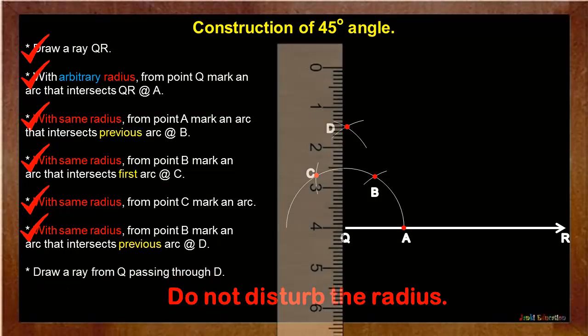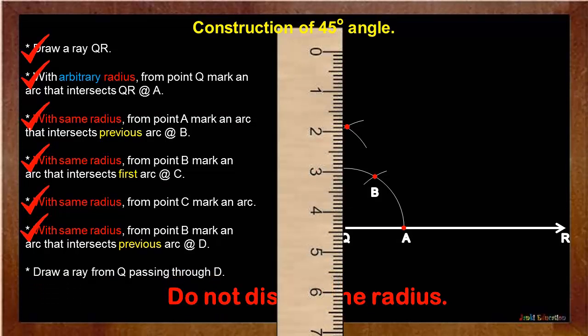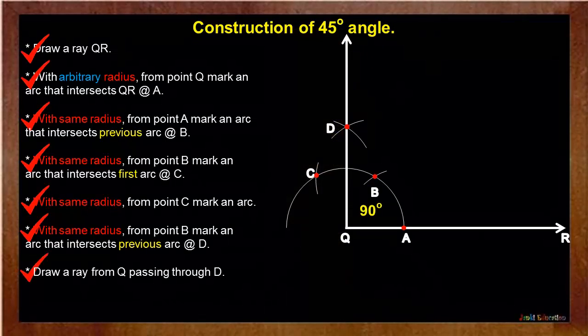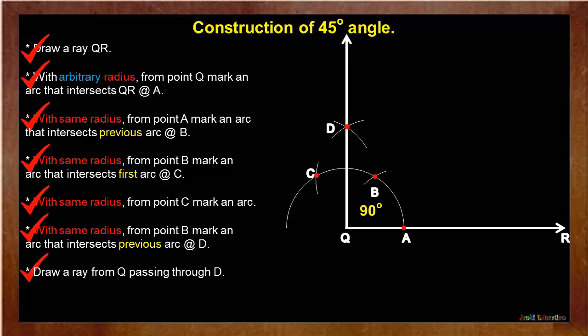Now, draw a ray from Q passing through point D. Here, this angle DQA is a 90 degree angle.